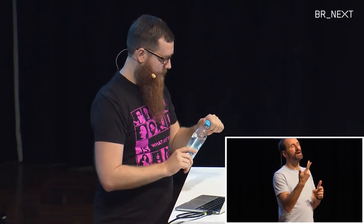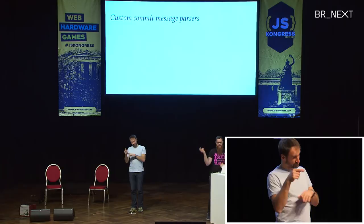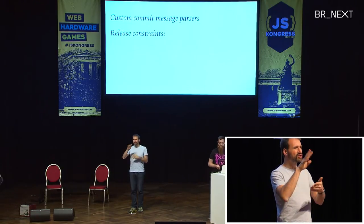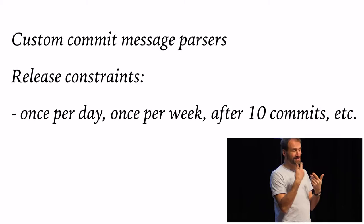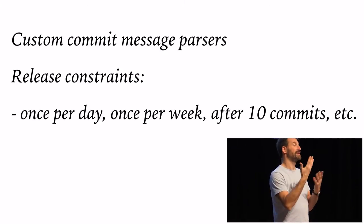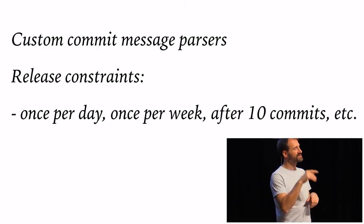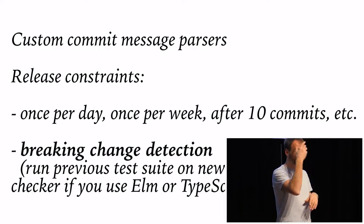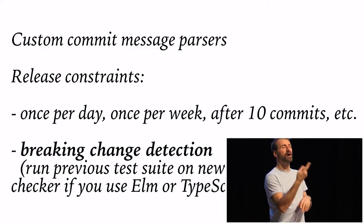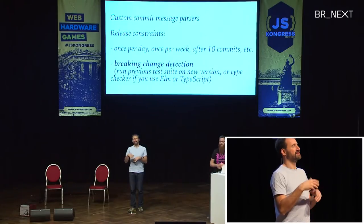There are a few options. If you don't agree with the default commit message tags, there's a standard for commit messages — a group of people who write commit message parsers and agree on a format — so you can hook in other parsers if you have a different scheme. There's also a plugin architecture called release constraints: if you don't want a release for every commit, you can set it to once a day, once a week, every ten commits, or whatever. And there's experimental support for breaking change detection — it checks out your previous version's test suite and runs it against the current version. If that breaks, you have an undocumented breaking change, and Semantic Release will refuse to do a release until you document it. If you're using TypeScript, Elm, or any type annotations, you can use those instead.